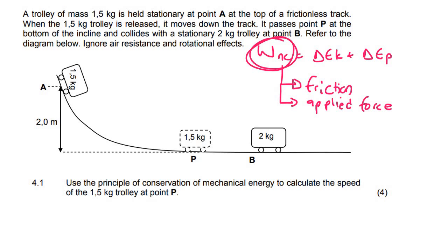So gravity does not get included inside there. So because we're on a frictionless track there's no friction and there's no applied force. So for WNC you would say zero.